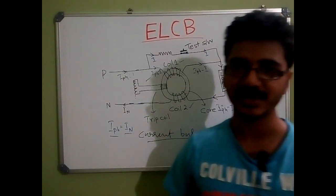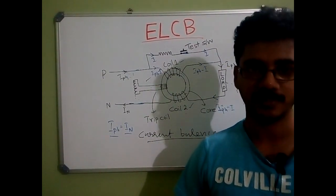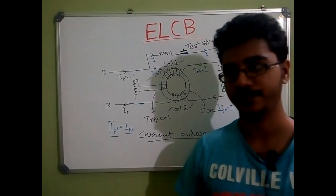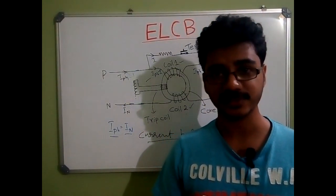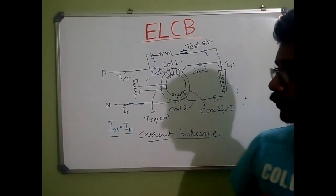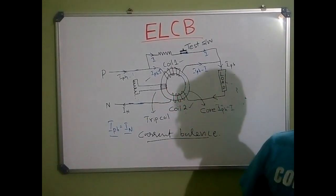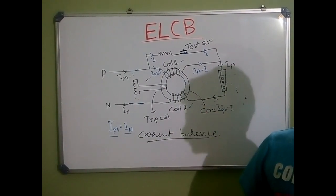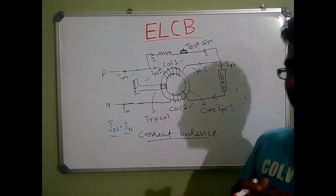ELCB, or Earth Leakage Circuit Breaker, is a protection device used to protect against earth leakage. Earth leakage happens because of insulation failures. When earth leakage happens, this ELCB isolates the system from the main supply.